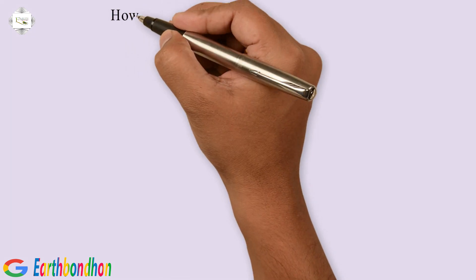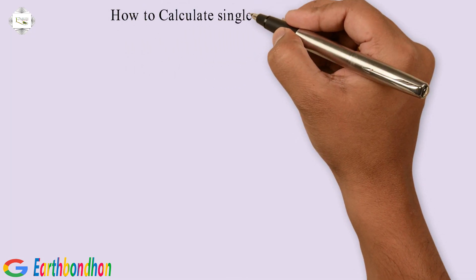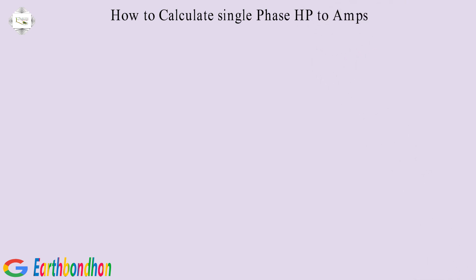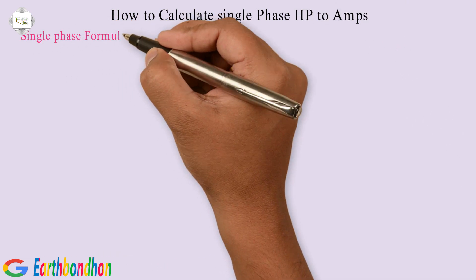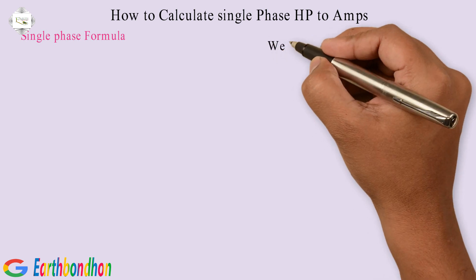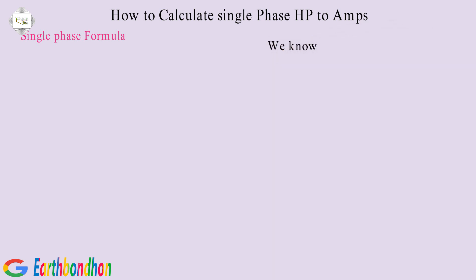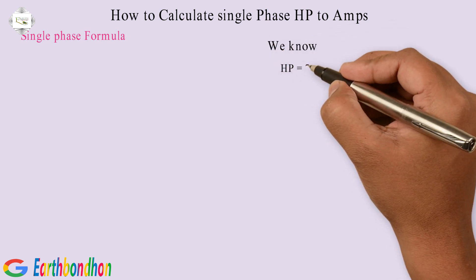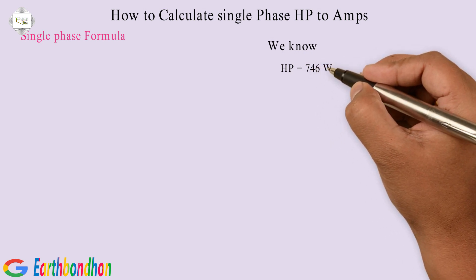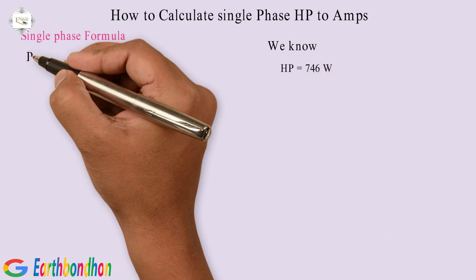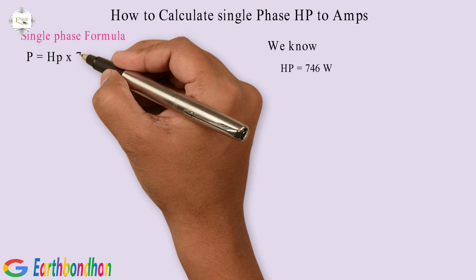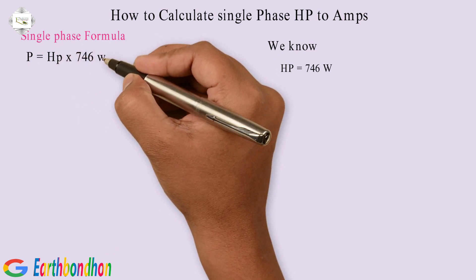How to Calculate Single Phase HP to Amps. Single Phase Formula: We know HP equals 746 Watts. Power equals HP multiplication 746 Watts.